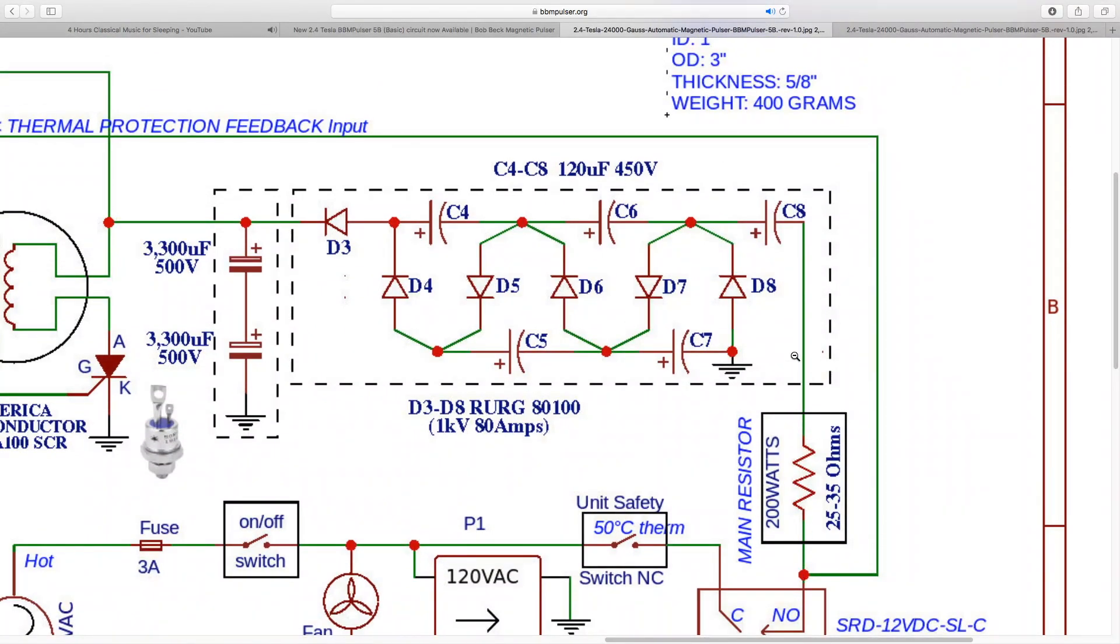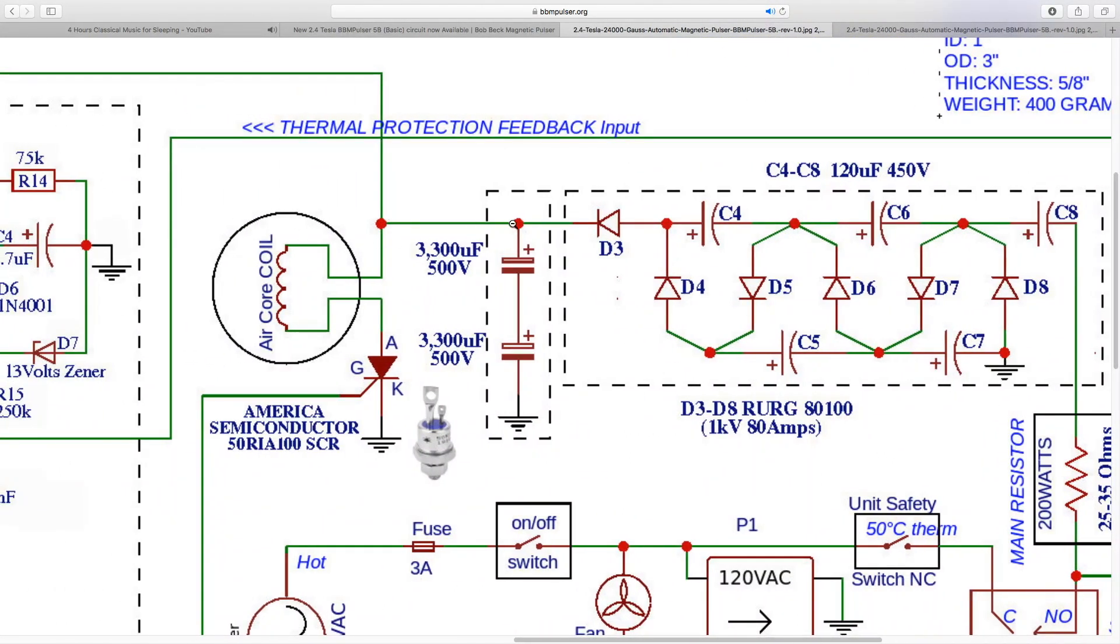Power from the resistor will go into the charging circuit. This is the charging circuit right here. It consists out of six diodes and five capacitors. All the capacitors are 120 microfarad 450 volts. All the diodes are RURG one kilowatt 80 amps. This is a 900 volt charging circuit. This will allow you to charge your capacitor bank all the way to 920 volts, between 900 to 950 volts, on average 920 volts.